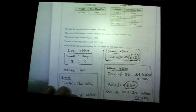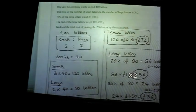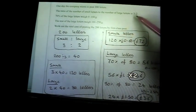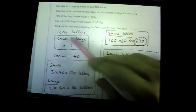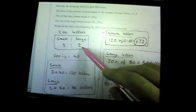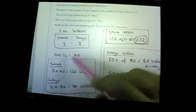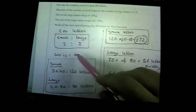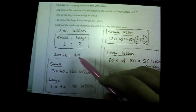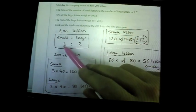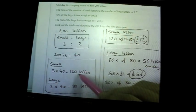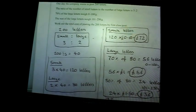Question eleven: a post office question. The company posts 200 letters in a ratio of small to large of 3:2. Five parts total, so 200 ÷ 5 = 40 per part. Three parts gives 120 small letters; two parts gives 80 large letters. Small letters cost 60p each: 120 × £0.60 = £72.